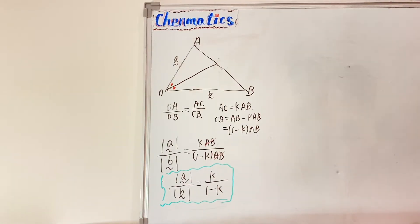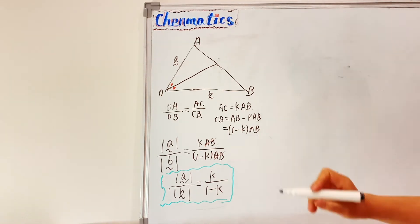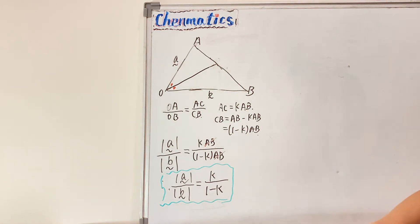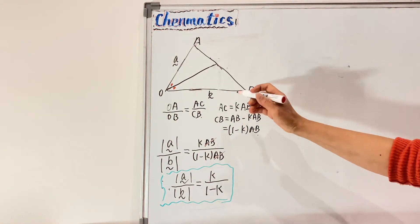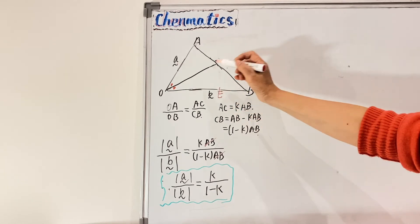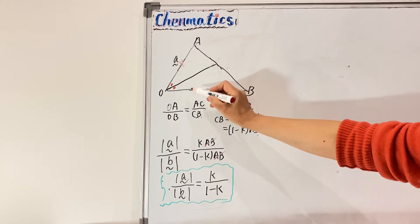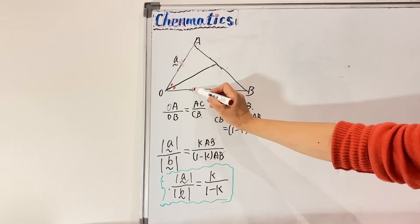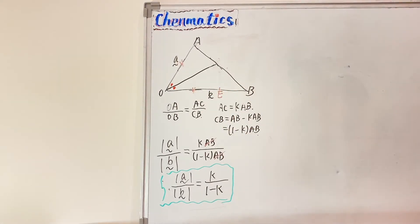I'm going to construct a rhombus using OA as one of the sides. I make a point E on OB such that OE equals OA. These two sides will be adjacent sides of the rhombus.